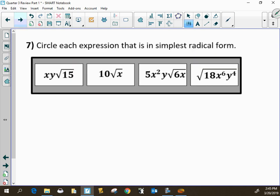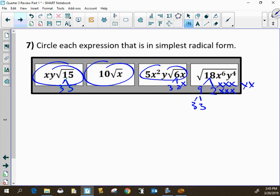For number 7, circle each expression that is in simplest form. Well, here we can break that down to a 3 and a 5, but we can't break that down anymore, so that's in simplest form. The x can't be paired with anything. 3, 2, x, there's nothing that can be paired there. But here, we see that we have a pair of 3's. We're going to have a couple pairs of x's and a couple pairs of y's. And so as a result, this one is not in simplest radical form.